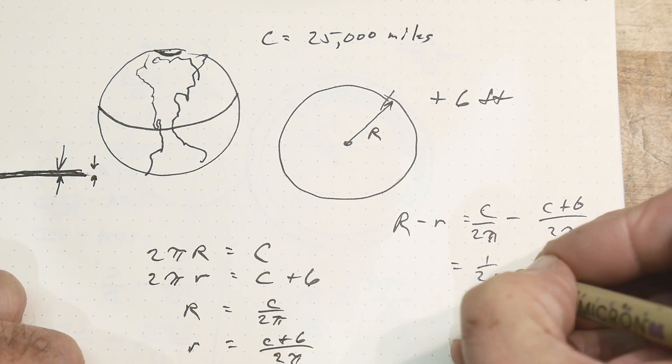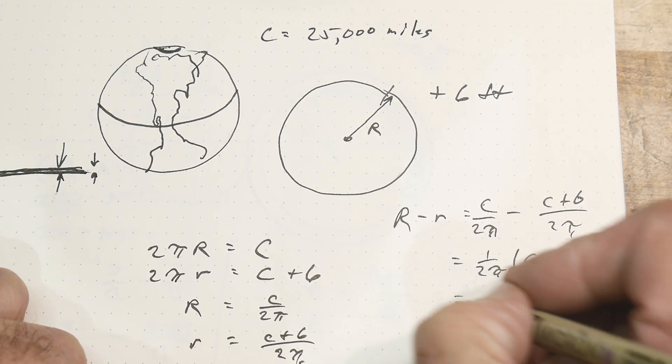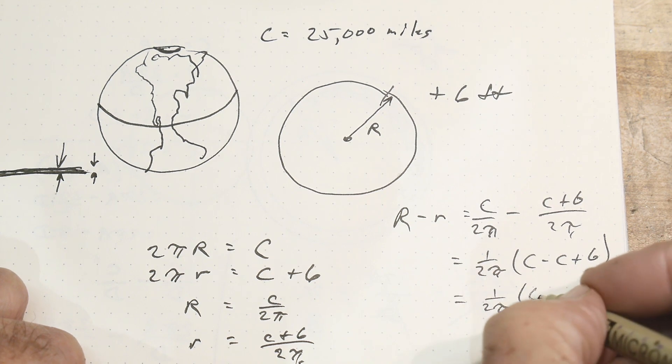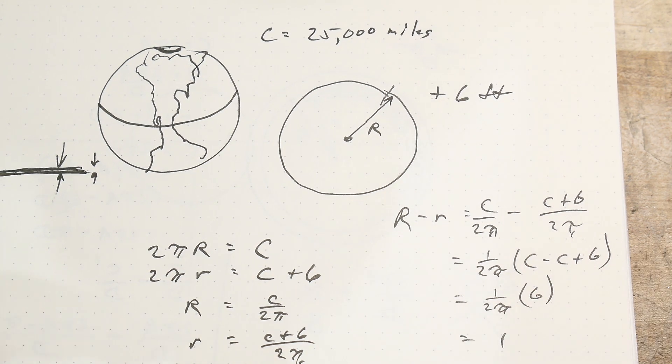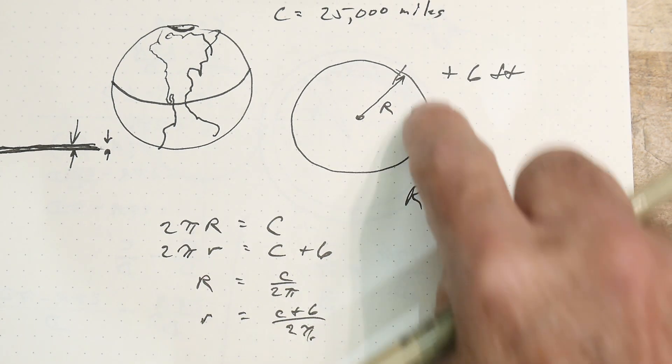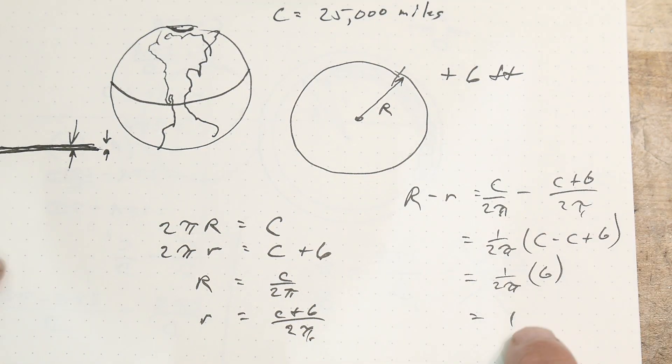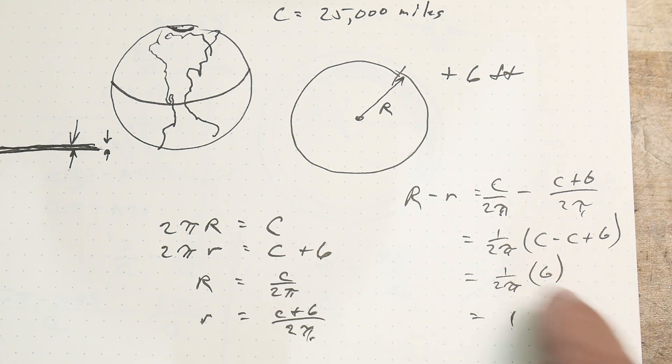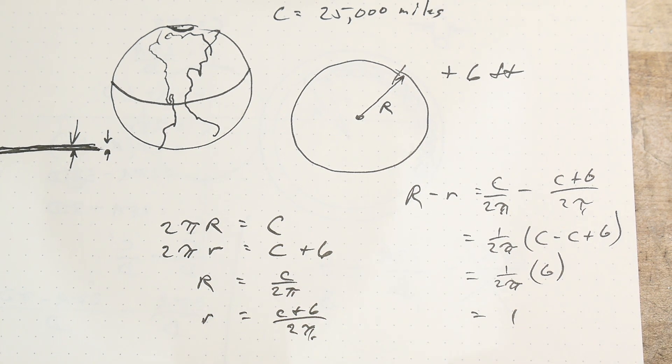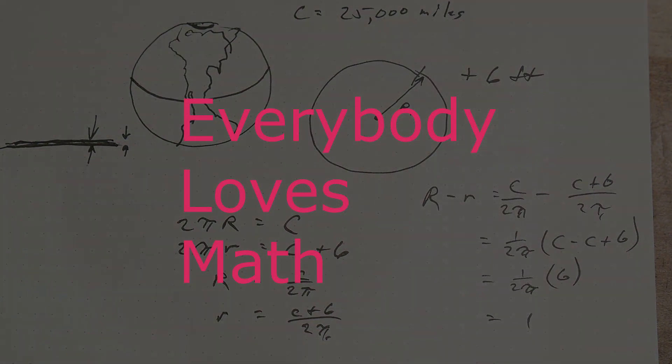Which is equal to 1/2π(C - C - 6). Which is equal to 1 over 2π. So 1 foot. 1 foot. You add 6 feet of string. And it hovers over the earth by a foot. Isn't that amazing? Just adding 6 feet. You go up 1 foot. Amazing. Anyway. There we go. That's the math for the day. Okay.